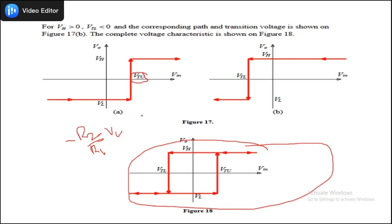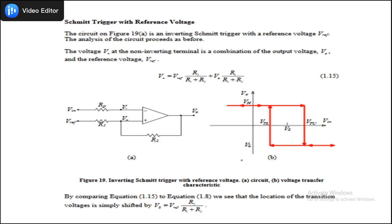Combining these two cases gives the voltage transfer characteristic for the non-inverting Schmitt trigger. Again, the difference VTU minus VTL represents the noise immunity window. Other cases exist where reference voltages can be applied on both terminals, similar to the comparator analysis — the entire noise immunity window shifts to either side. For better understanding, refer to the additional video from gatepaper.in.